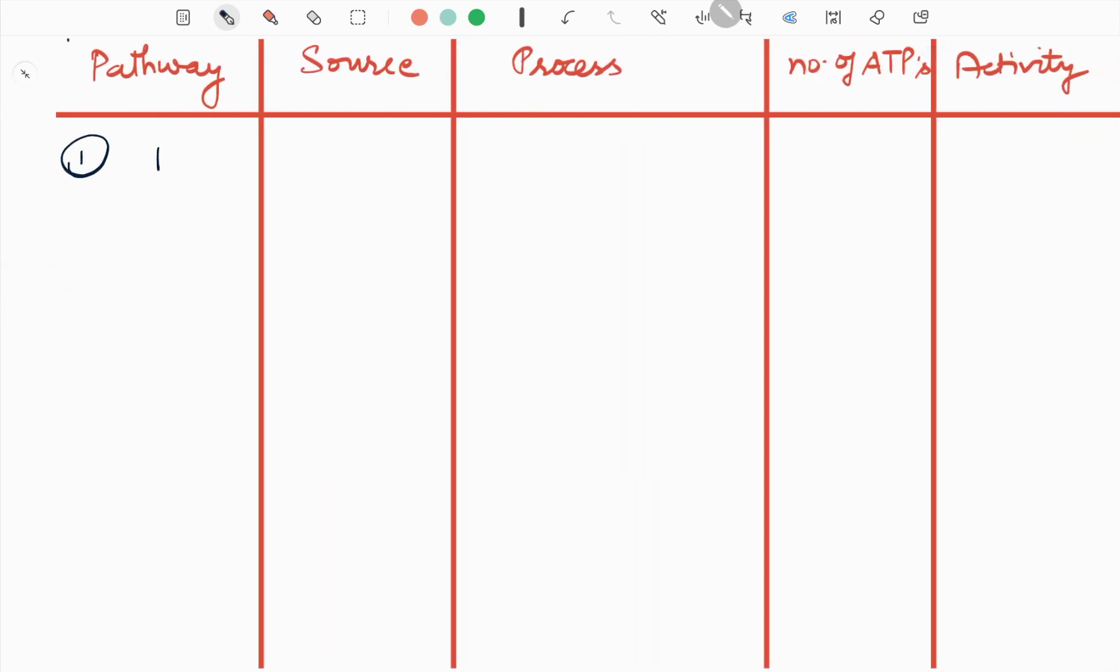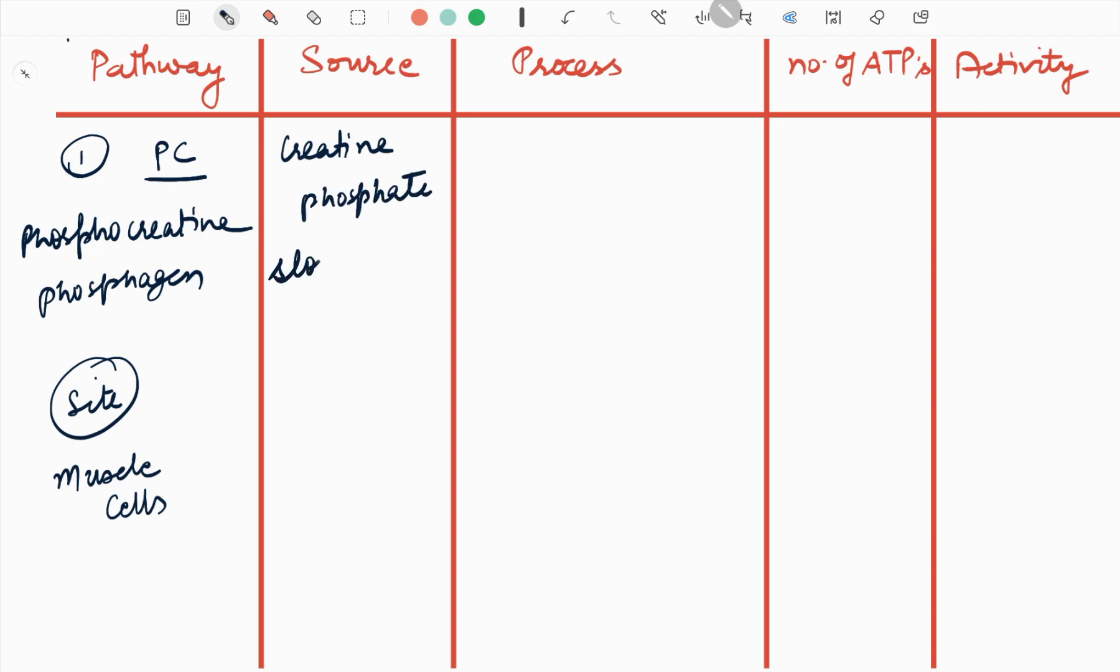So here is the table where I can show you all of them. Number one, PC pathway - that is phosphocreatine phosphagen. Where this takes place: the site is muscle cells. Their source is basically creatine phosphate stored inside skeletal muscles.